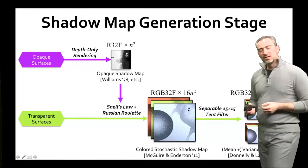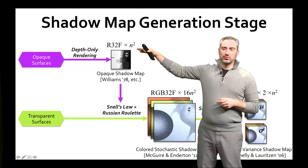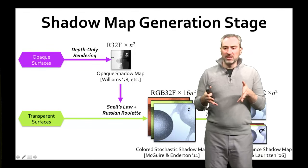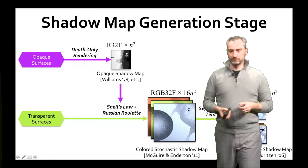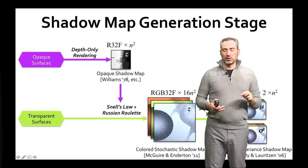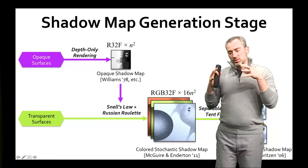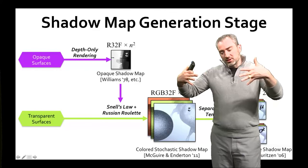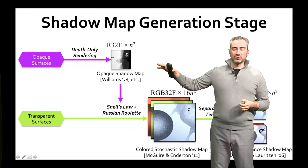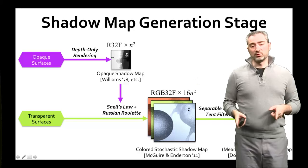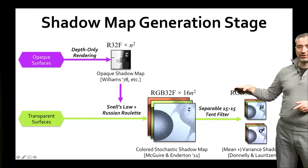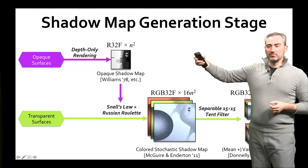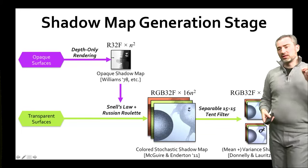Here's an overview of our method. First we generate shadow maps. Opaque surfaces go through a regular shadow map production pass at regular resolution, and transparent surfaces go through a stochastic shadow map pass — essentially McGuire and Enderton's colored stochastic shadow map algorithm. Within that method, to create caustics we apply Snell's law, the BSDF, and Fresnel terms to compute that surfaces at normal incidence will allow light to mostly pass through, while light gets focused away from surfaces seen at glancing angles. This produces a high-resolution colored stochastic shadow map, which is too expensive to sample in real time, so we apply a 15×15 separable tent filter to create a Donnelly and Loritzan style mean-invariant shadow map with colored means and colored variances.